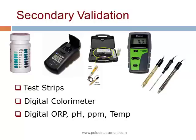With any inline automated system, it's always good to have a secondary validation method to confirm if your system is working efficiently. These can be simple test strips, a digital colorimeter, a portable test meter for ORP, or a more sophisticated ORP and pH meter.